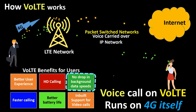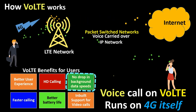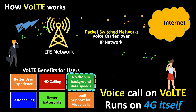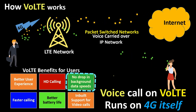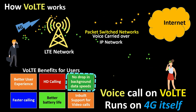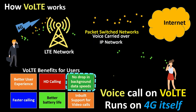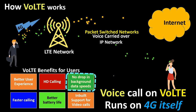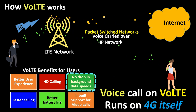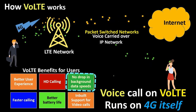The third benefit is no drop in background data speeds. Without VoLTE, users need to switch from the 4G network to 2G or 3G networks for voice calls, which reduces the speed of the data connection running in the background. In some cases, such as on 2G networks, data stops working entirely while you are on a call. With VoLTE, since the user remains always on 4G, the speed of the data connection never degrades, even during voice calls.